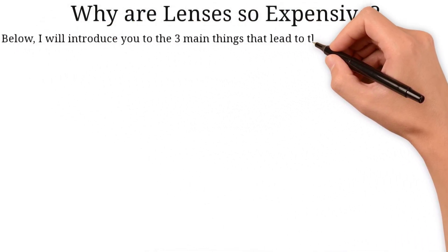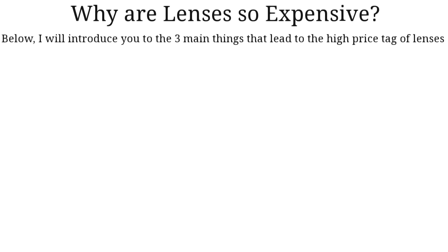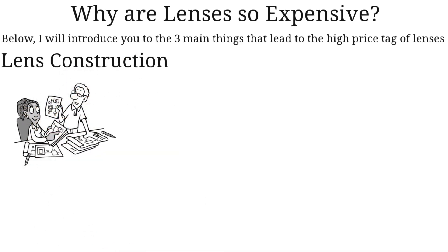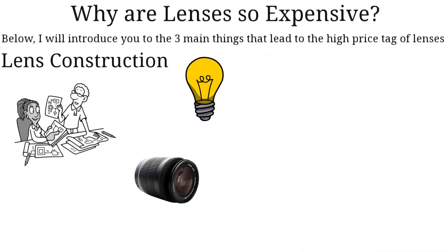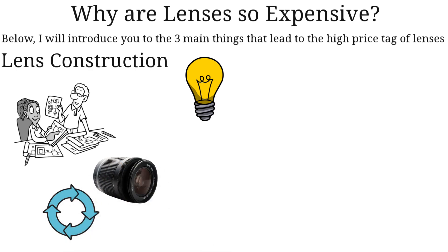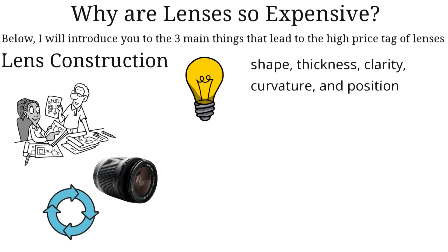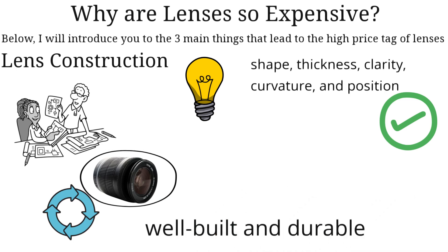Why are lenses so expensive? I will introduce you to the three main things that lead to the high price tag. Lens construction: it indeed looks like a simple and small tool, but there is much more to a lens design. It is a light controlling device. It accomplishes this by bending and filtering light through a variety of components within the lens body. These elements' shape, thickness, clarity, curvature, and position must be done in a very accurate way. The construction must be well-built and durable. Furthermore, there is also the weather sealing feature, which is self-explanatory.